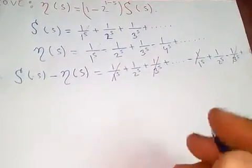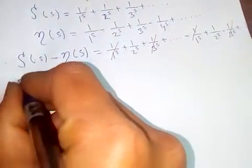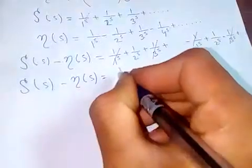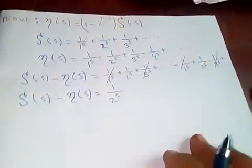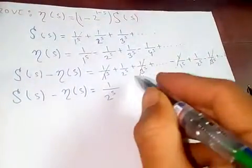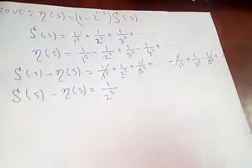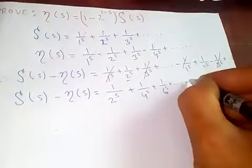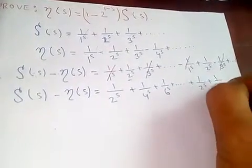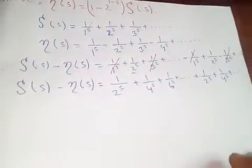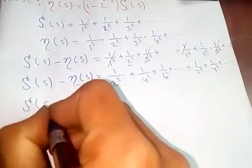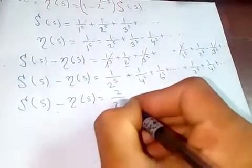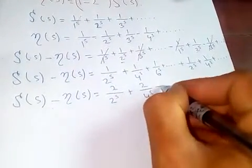After cancellation, what we are left with is zeta(s) minus eta(s) equals 1/2^s + 1/4^s + 1/6^s + ... plus 1/2^s + 1/4^s + ... So combining these, we get 2/2^s + 2/4^s + 2/6^s + ... and so on.